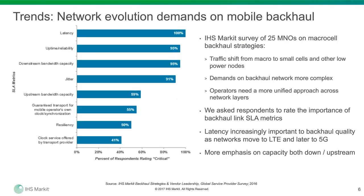To give more context and show how demanding things are for backhaul, let's look at some considerations around backhaul connectivity. This chart is taken from an annual IHS Market survey of operators, where we ask transport and transmission network managers about their strategies and technology choices for backhaul. In this question, respondents rate backhaul service level agreement metrics on a scale of one to seven — where one is not important at all, four is somewhat important, and seven is critical. Latency is top-rated as a critical SLA metric, at 100% of respondents, followed by uptime and reliability and downstream capacity.